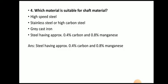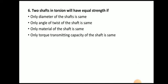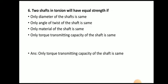Next question: which material is suitable for shaft material? The answer is steel having approximately 0.4% carbon and 0.8% manganese — this is suitable for shaft material. Next question: if the diameter of a shaft is doubled, the power transmitted capacity will be eight times.